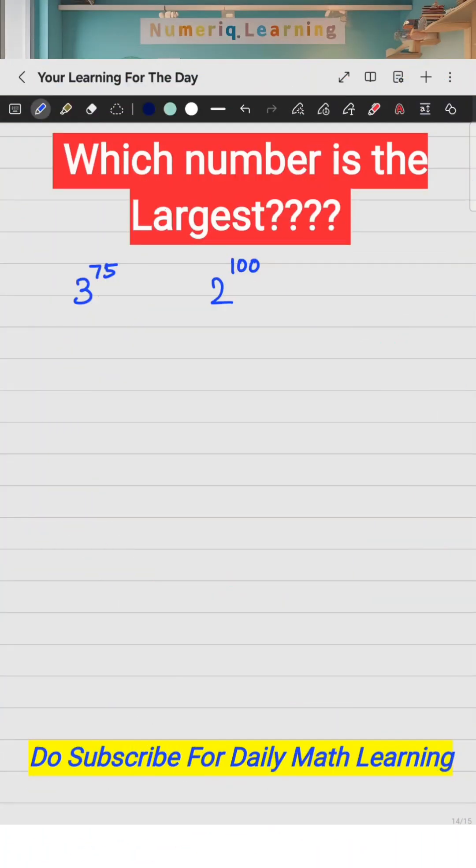Hi all, you are given two exponents here. You have to compare and find which one is the largest. The way to do this: you have 3 to the power 75 and 2 to the power 100.